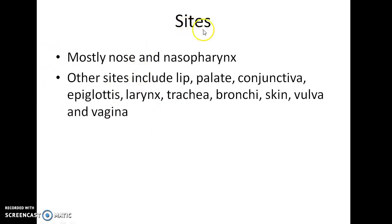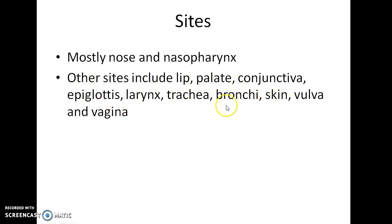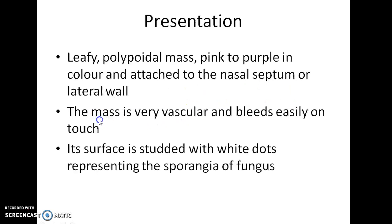What are the sites of Rhinosporidiosis? Rhinosporidiosis mostly affects the nose and nasopharynx. Other sites include lip, palate, conjunctiva, epiglottis, larynx, trachea, bronchi, skin, vulva and vagina.